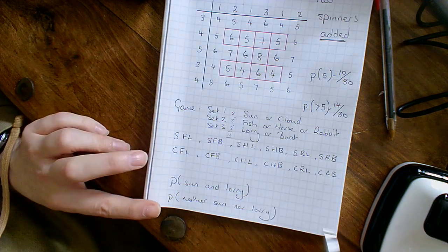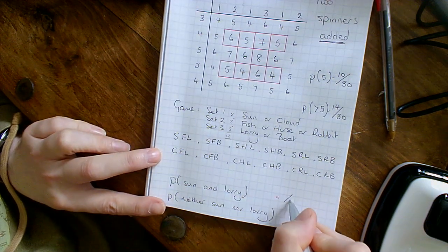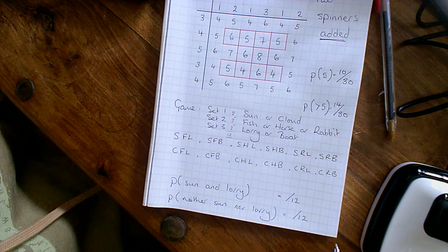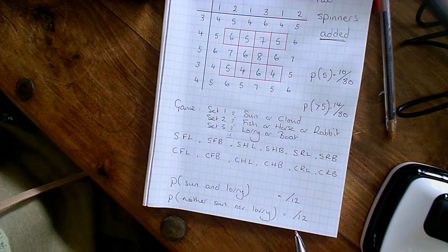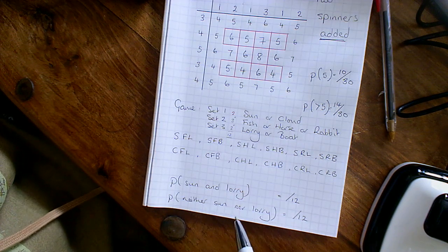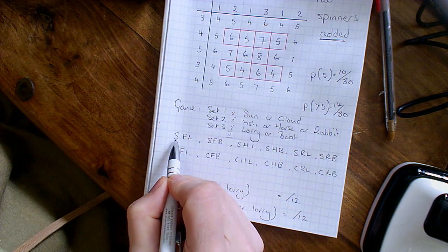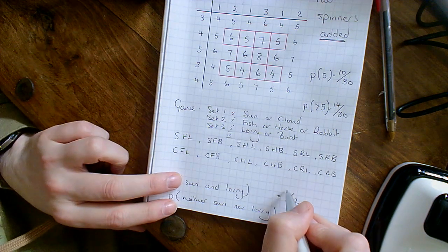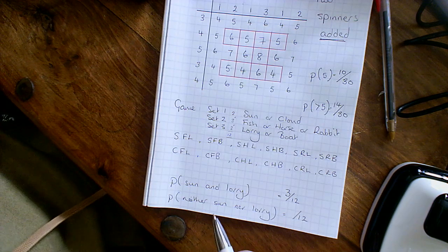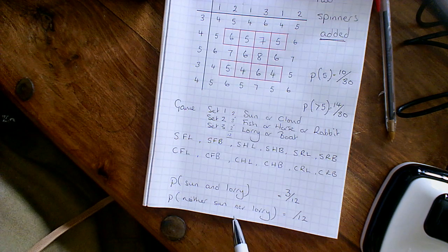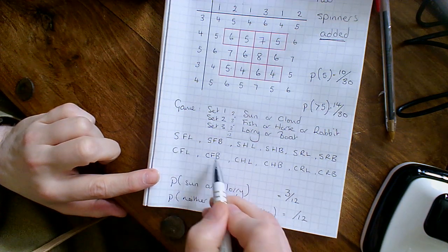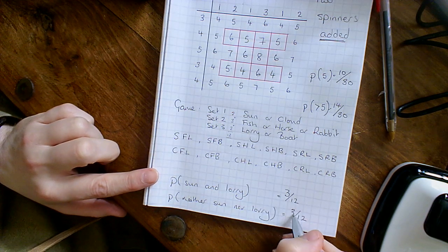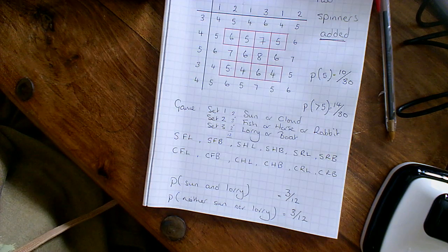That's all twelve outcomes, so probabilities will be out of twelve. Fractions are the preferred method — decimals or percentages are less preferred. The probability of getting a sun and a lorry: counting sun-fish-lorry, sun-horse-lorry, sun-rabbit-lorry — that's three out of twelve. For the next part, can't have a sun or a lorry: counting those valid outcomes gives three out of twelve again.